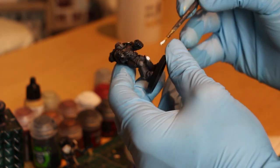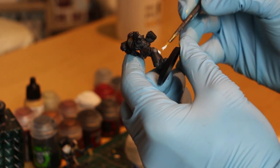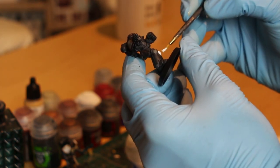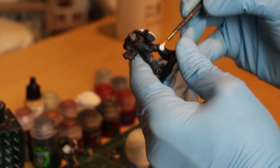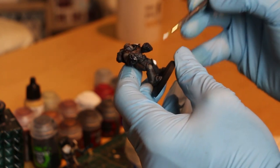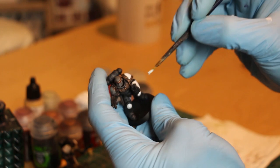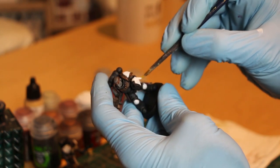Now again I'm applying this to all of my model where it's, well, where it's meant to be white obviously. So we've got the power fist, the knee pads, the helmet. We just need to get all these areas looking kind of uniform at the moment.